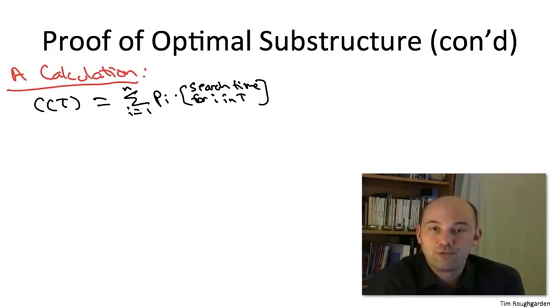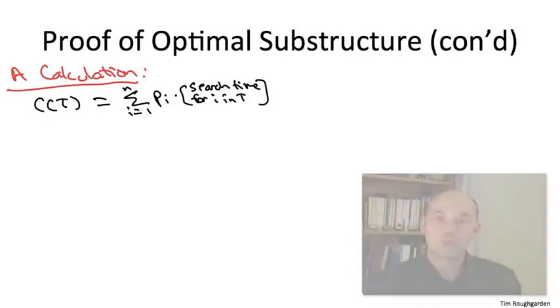That is, there's a simple formula to compute the search time in T if I told you the search times in T1 and T2. That's what's going to allow us to easily analyze the ramifications of the cut and paste, and to notice that in cutting and pasting in a better tree for the subproblem, we actually get a better tree for the original problem.